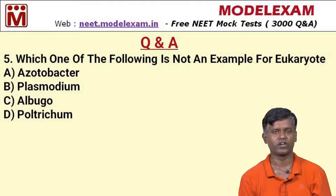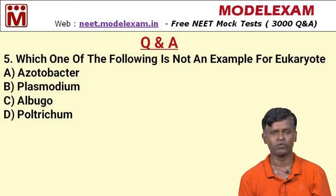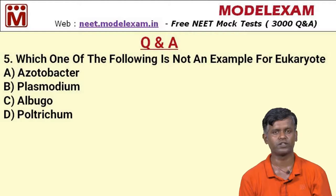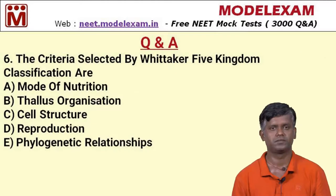Question number five: which one of the following is not an example of a eukaryote? Option A: Acetobacter, option B: Plasmodium, option C: Albugo, option D: Polytrichum. Acetobacter belongs to bacteria and is not a eukaryote. So for question five, option A is the correct answer.